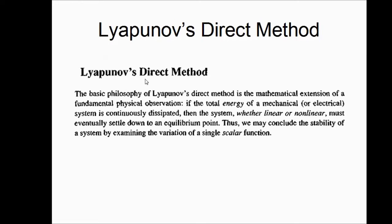Now, Lyapunov's direct method. The basic idea is a mathematical extension of a fundamental physical observation: if the total energy of a mechanical or electrical system is continuously dissipated, then the system — whether linear or nonlinear — must eventually settle down to an equilibrium point. Thus we may conclude the stability of the system by examining the variation of a single scalar function. The idea comes from the energy of physical systems: mechanical, electrical, chemical, or others.